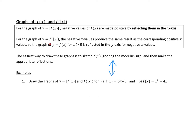For the graph of y = f(|x|), the negative x values produce the same results as the corresponding positive x values. So for the graph of y = f(x) for x ≥ 0, it is reflected in the y-axis for the negative values.